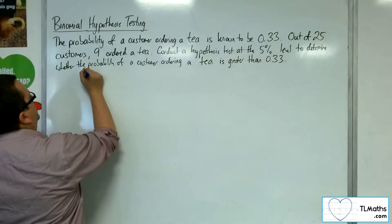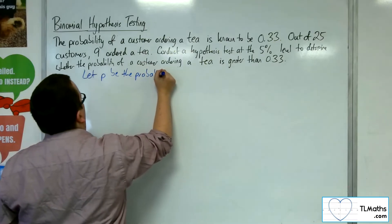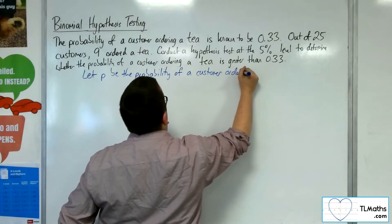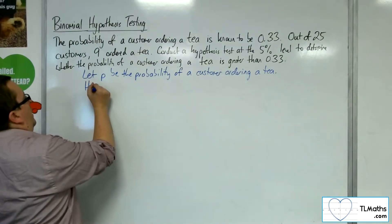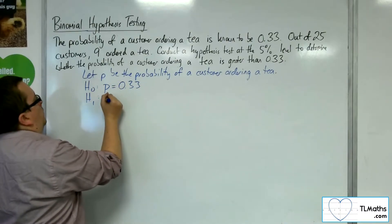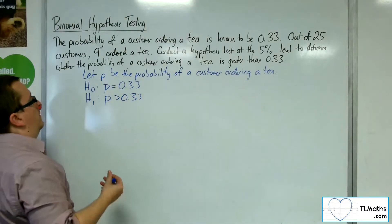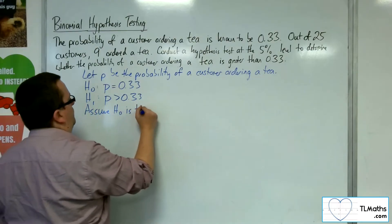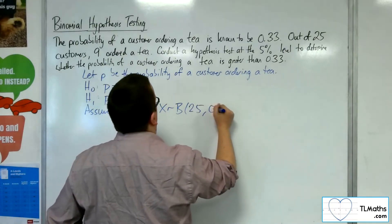Let P be the probability of a customer ordering a tea. The null hypothesis says that P equals 0.33, and the alternative is that P is greater than 0.33, because we're looking at whether it's greater than that probability. We assume that H0 is true, which sets up a binomial distribution with N = 25 and a probability of 0.33.